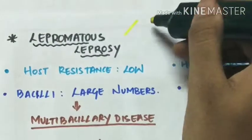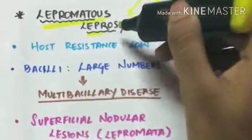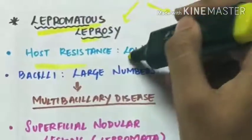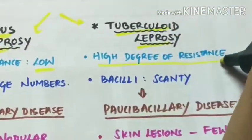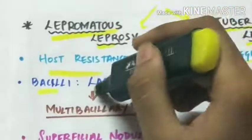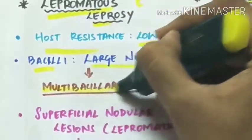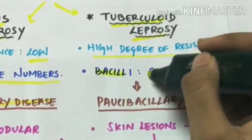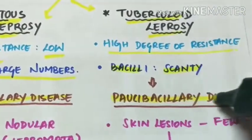Comparing the two main types: in lepromatous leprosy, the host resistance is low, and the bacilli are found in large numbers — so this is referred to as multibacillary disease. In tuberculoid leprosy, there is a high degree of resistance and bacilli are very scanty, so it is referred to as paucibacillary disease.